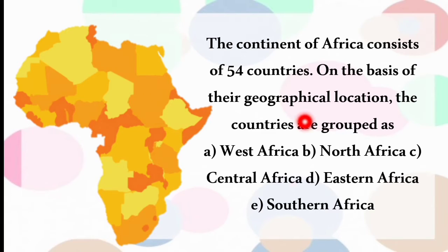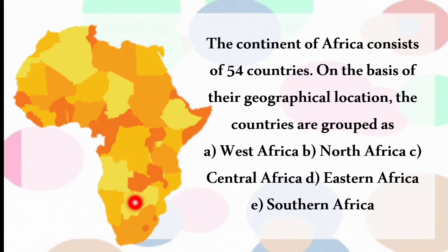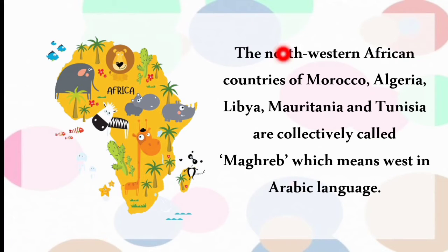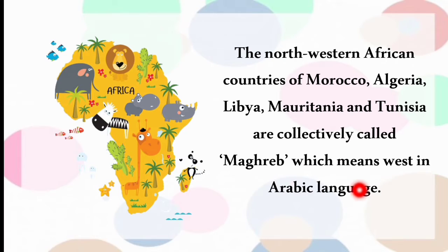The continent of Africa consists of 54 countries. Based on geographical location, the countries are grouped as West Africa, North Africa, Central Africa, East Africa and Southern Africa. The North Western African countries of Morocco, Algeria, Libya, Mauritania and Tunisia are collectively called Maghreb, which means 'West' in Arabic language.